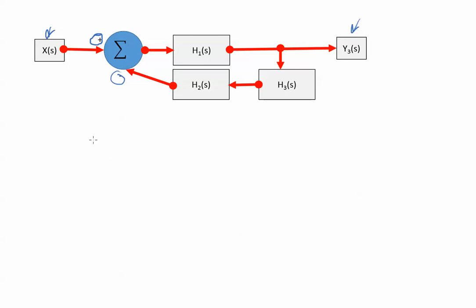I'm going to use y3. What is y3 equal to? I'm going to drop off the s's just so I can draw faster. Well, I'm going to have X. It comes through the summer on the positive side, it gets chained through h1, and goes into y3.